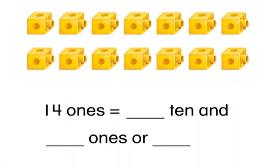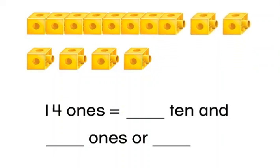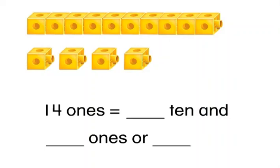Let's regroup these blocks into tens and ones. There are fourteen ones. Regroup ten ones to make one ten. How many ones remain? Four. So fourteen ones equals one ten and four ones, or fourteen.